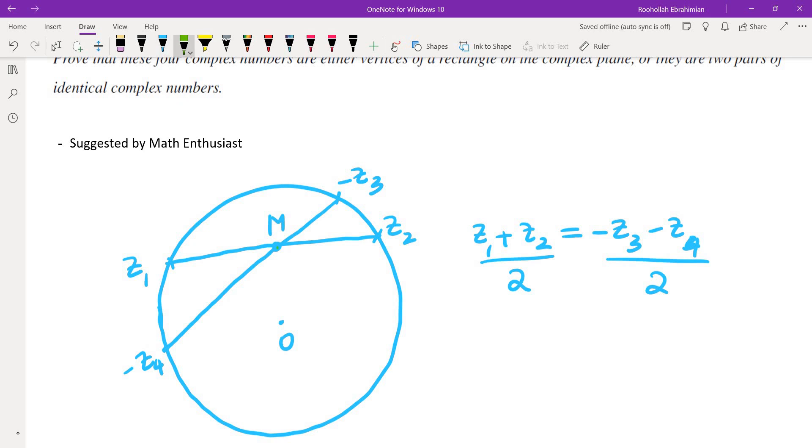One property of the midpoint is that when you connect the midpoint with the center, which in this case is the origin, OM must be perpendicular to both z1 z2 and also to negative z3 negative z4. But in this case it doesn't look like it is because these two are intersecting lines. They cannot be perpendicular to the same line, which means z1 must be the same as negative z4 and z2 must be the same as negative z3.